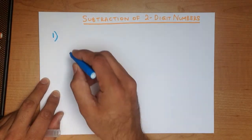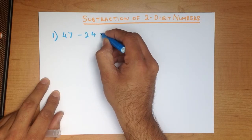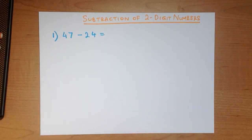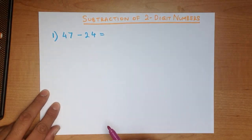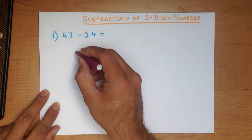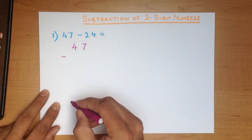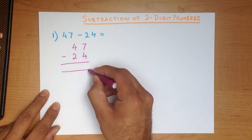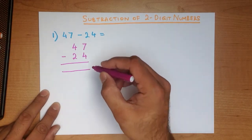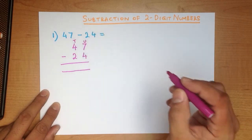What is 47 minus 24? To use the vertical format, we have to write these numbers down in columns. 47 minus 24. Let's put a nice big equal sign at the bottom. We can label these columns — the first one is units, and the one next to it is the tens column.